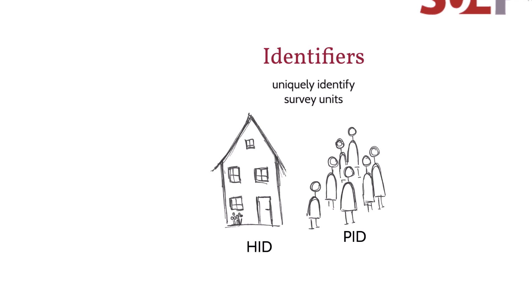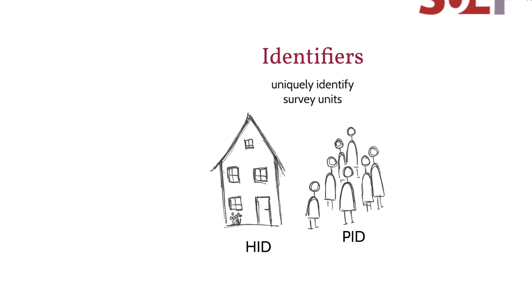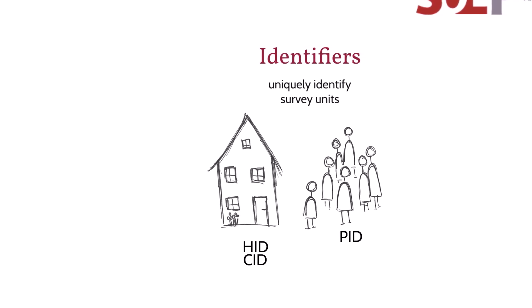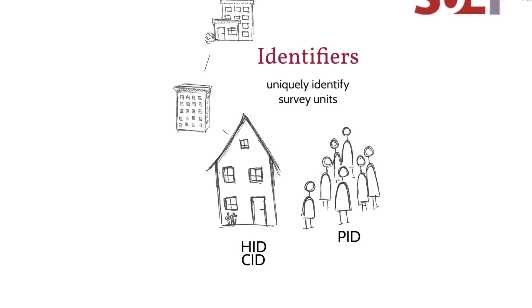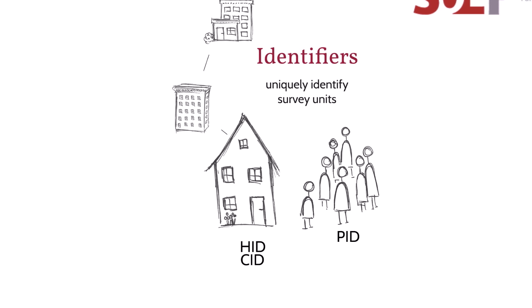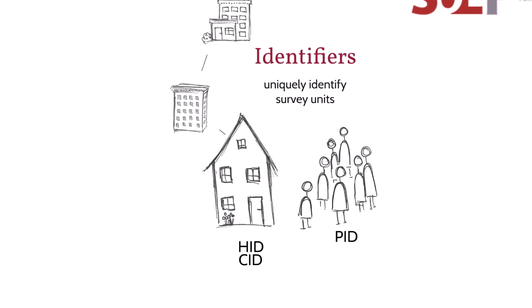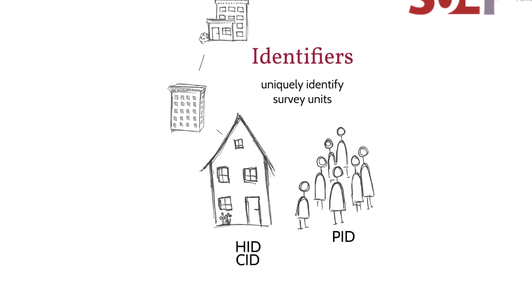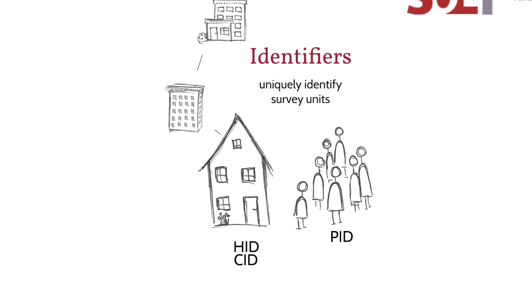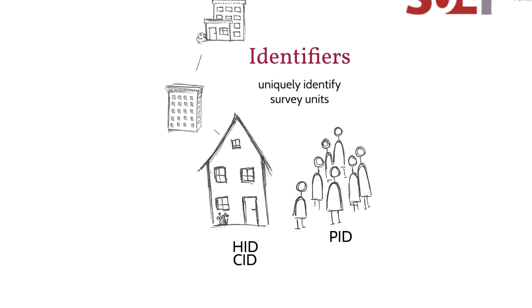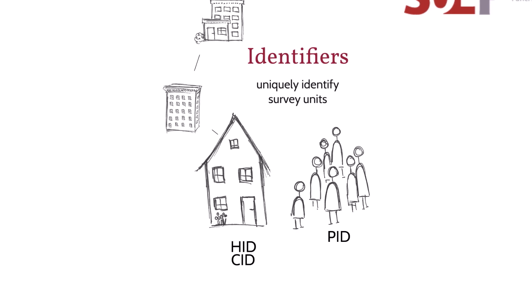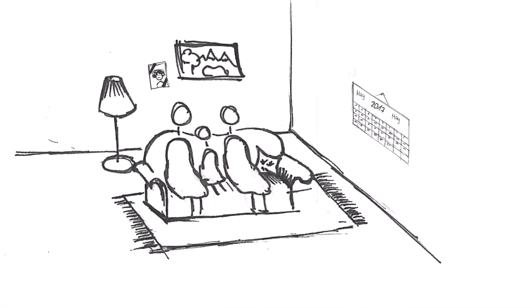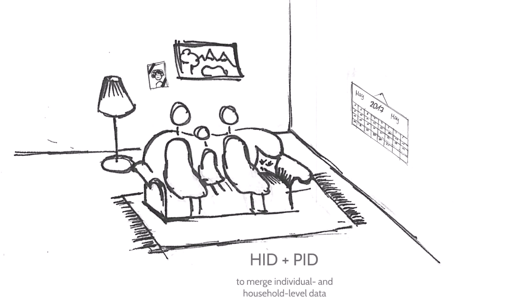In addition to the current household ID, we also report the original household ID, CID. It indicates the first household to which the individual households in the SERP can be traced. Even if the person moves into a new household, the CID never changes — in this case, the household receives a new household number. HID and CID can be used to trace an individual's panel history through different households.